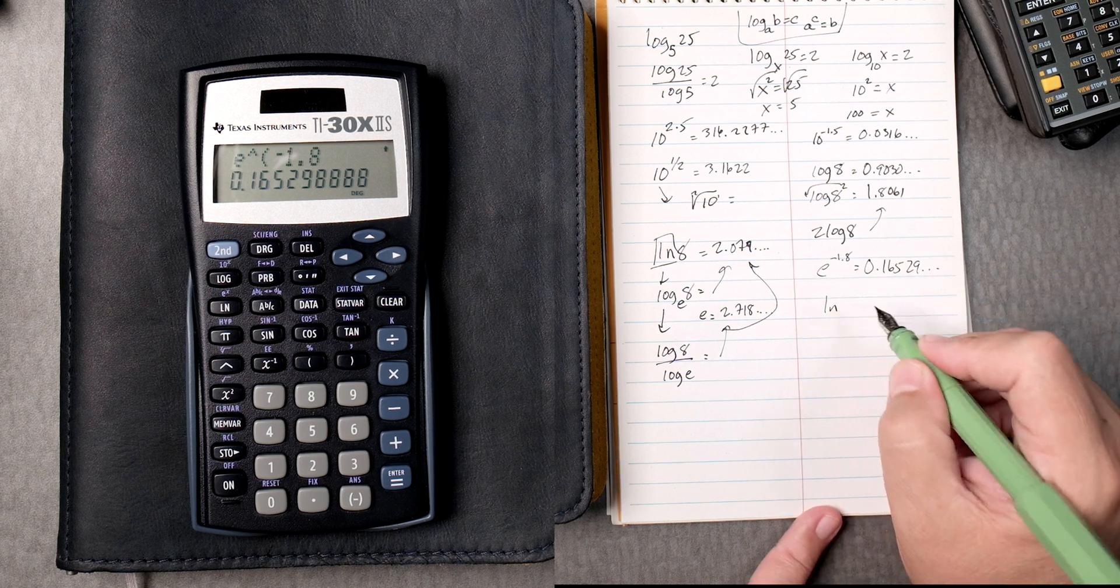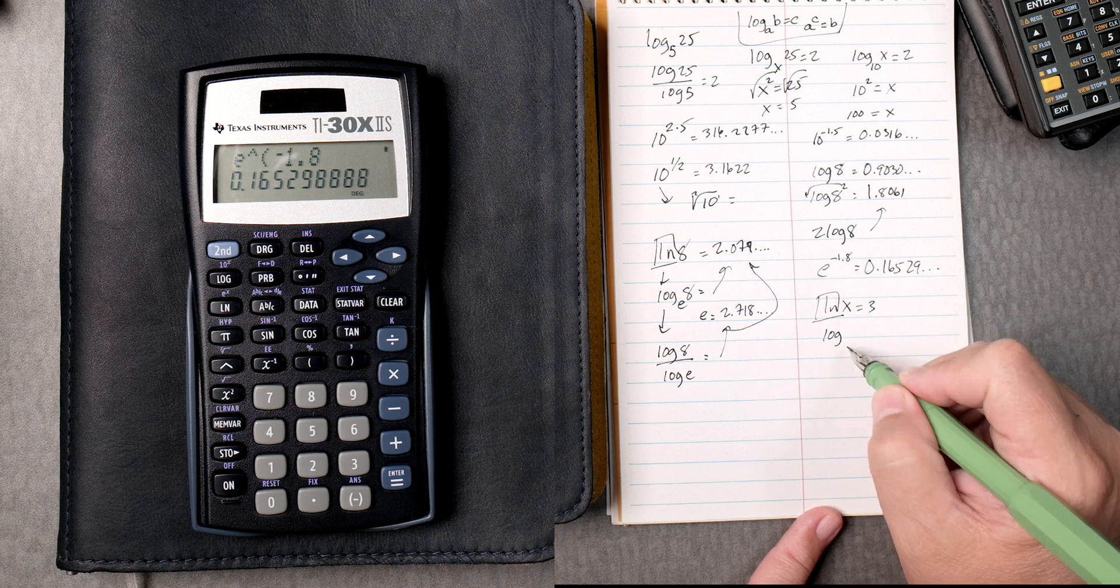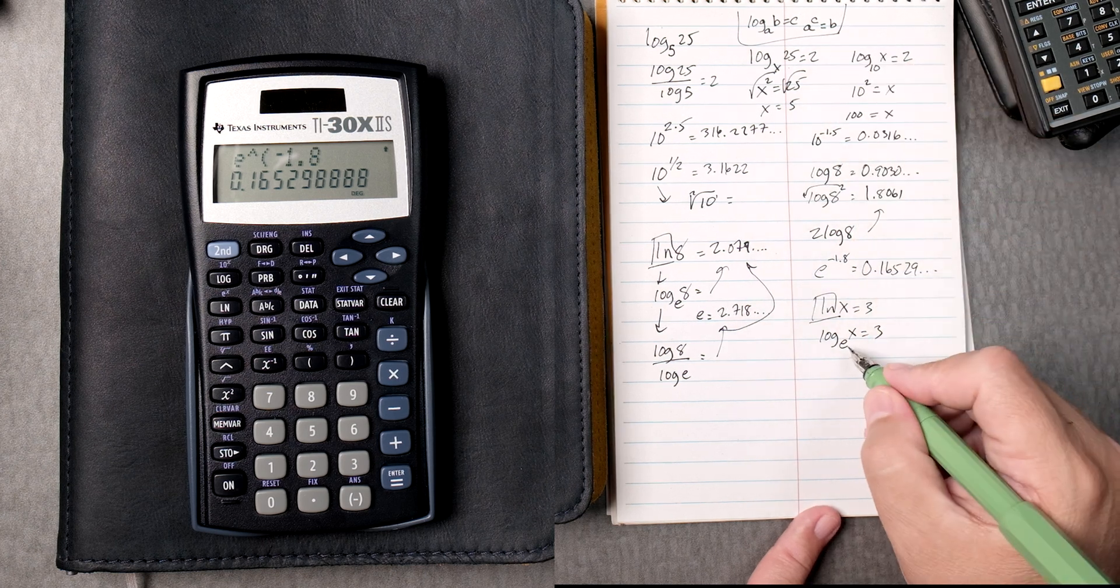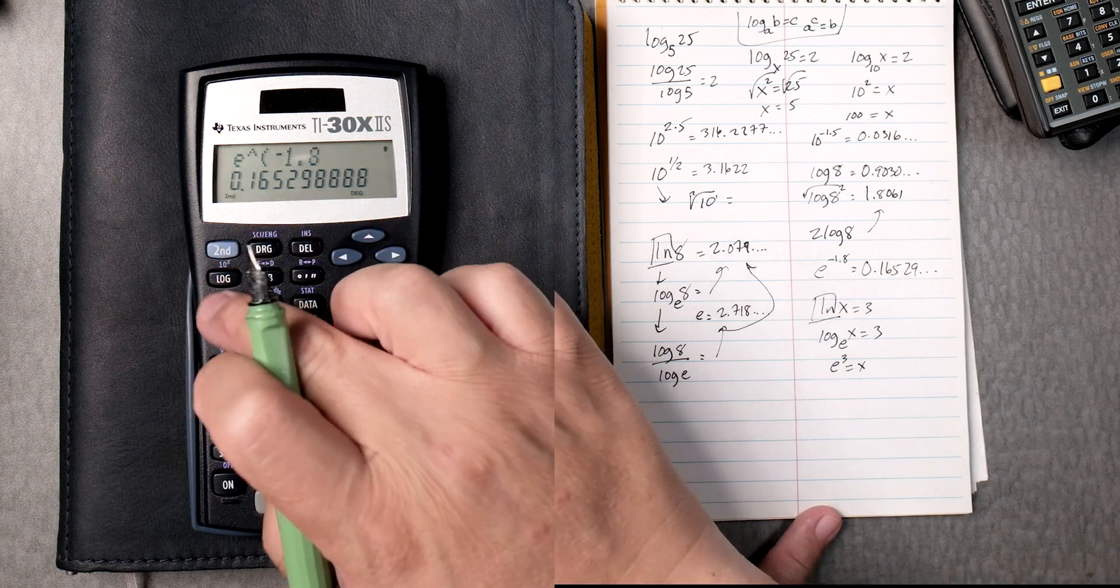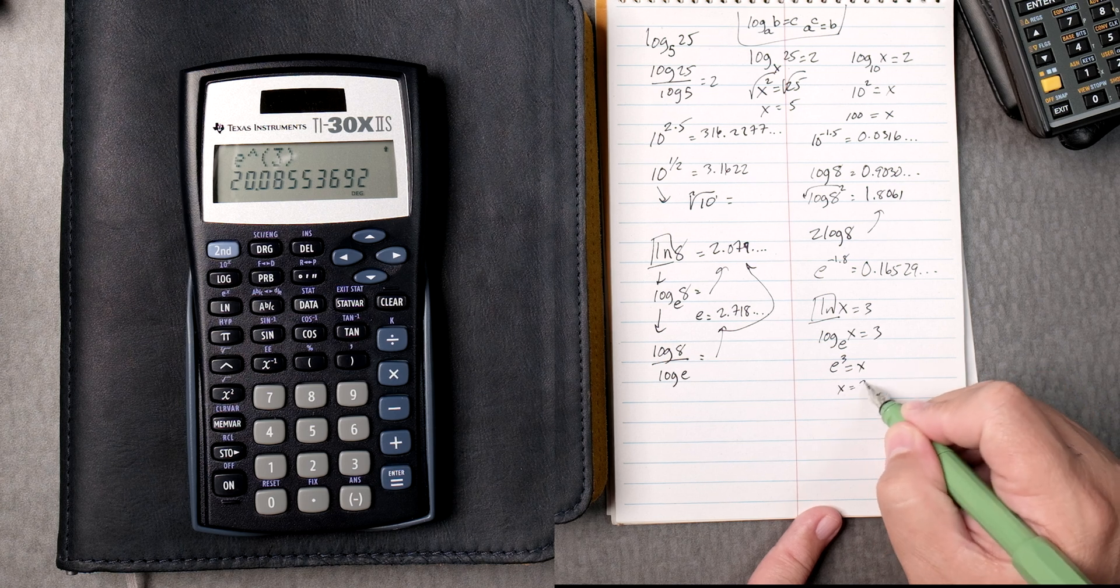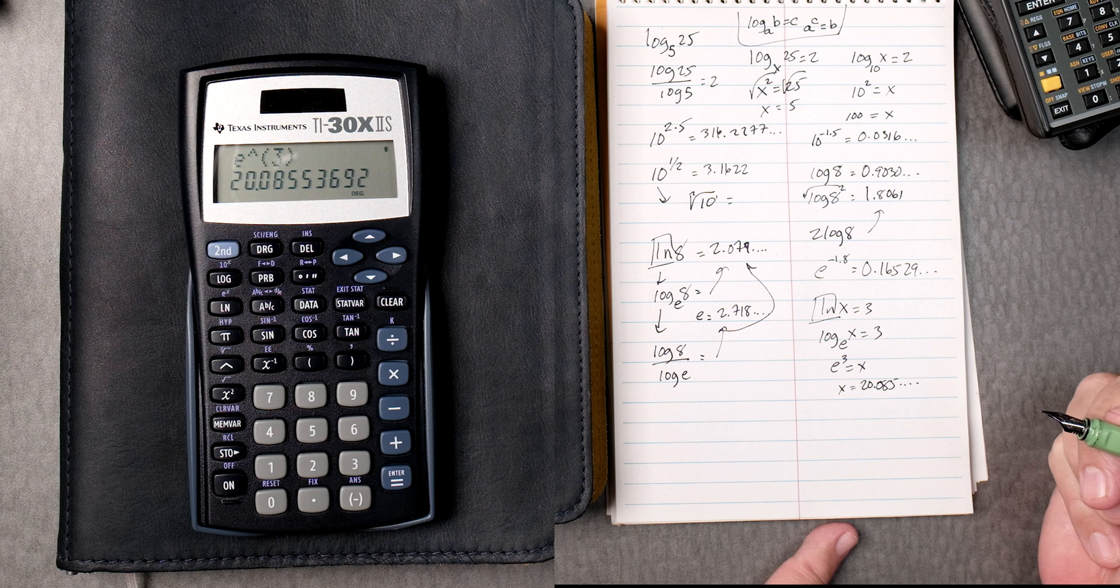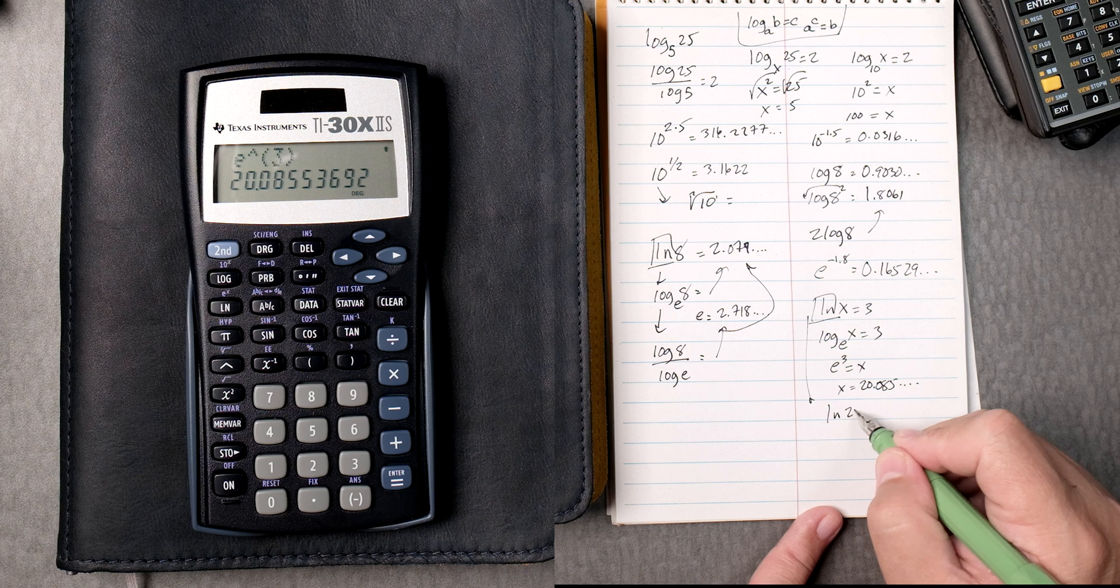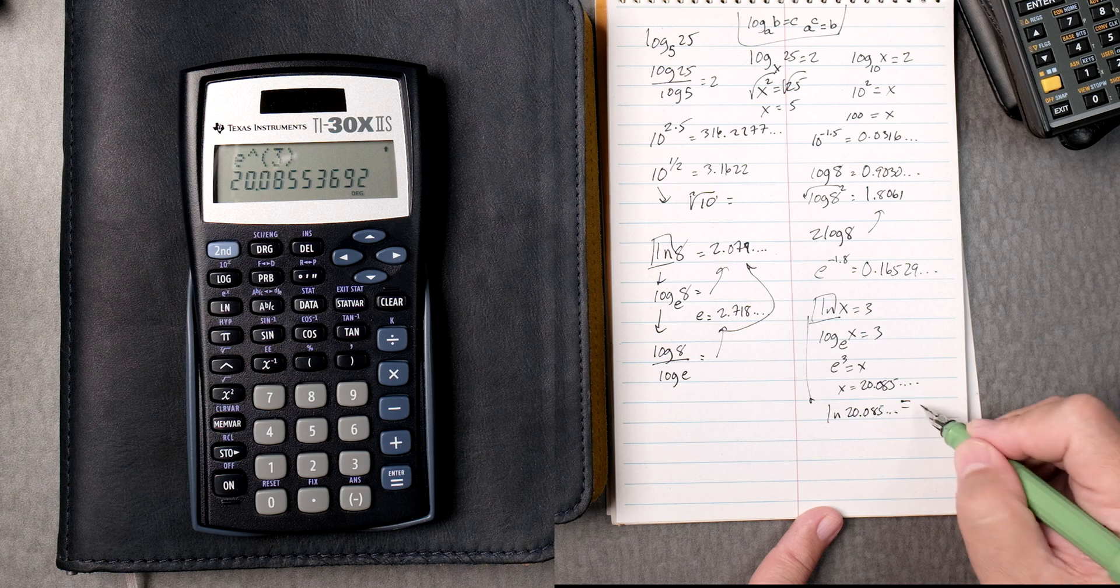And then the natural log of x equals 3. How do you do that? This is the natural log, which is really the log of e to the x equals 3. Using this rule again, e to the third equals x. So, you go second, e to the x, you type in the 3, you close it, your equals, gives you x equals 20.085 and so forth.